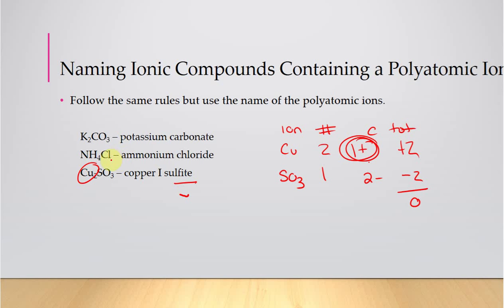Ammonium and chlorine becomes chloride — ammonium chloride. Potassium carbonate: no Roman numeral because potassium is not a transition metal.